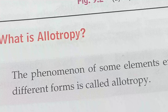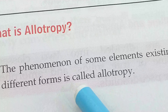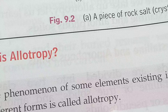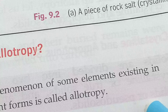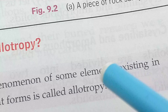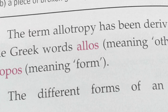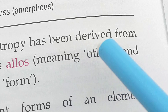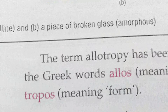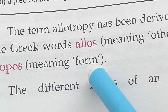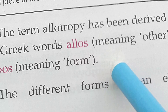What is allotropy? The phenomenon of some elements existing in different forms is called allotropy. The term allotropy has been derived from the Greek word 'allos' meaning 'other' and 'tropos' meaning 'form'. Chemical substances that show different forms follow allotropy.